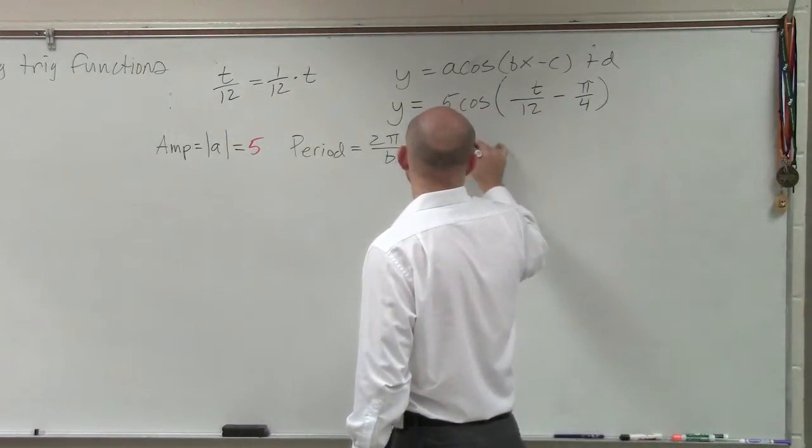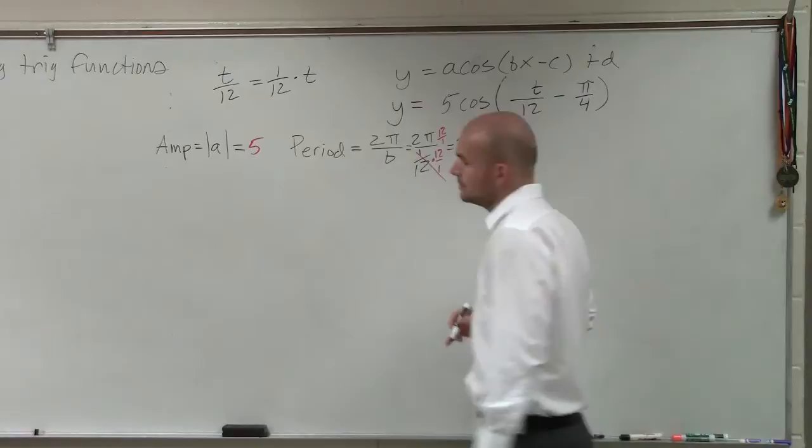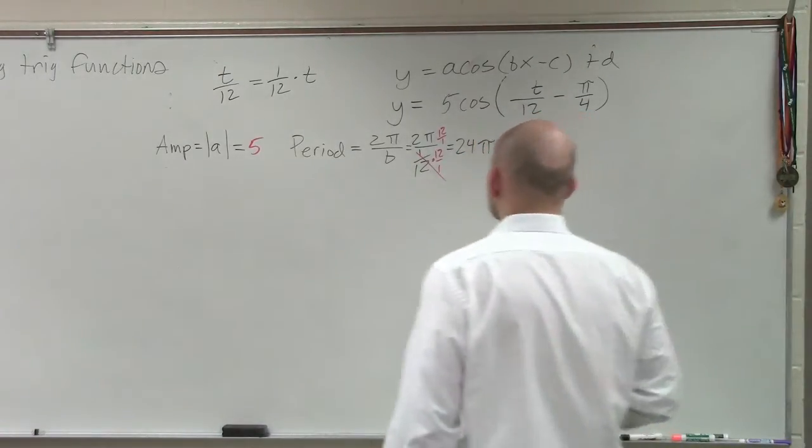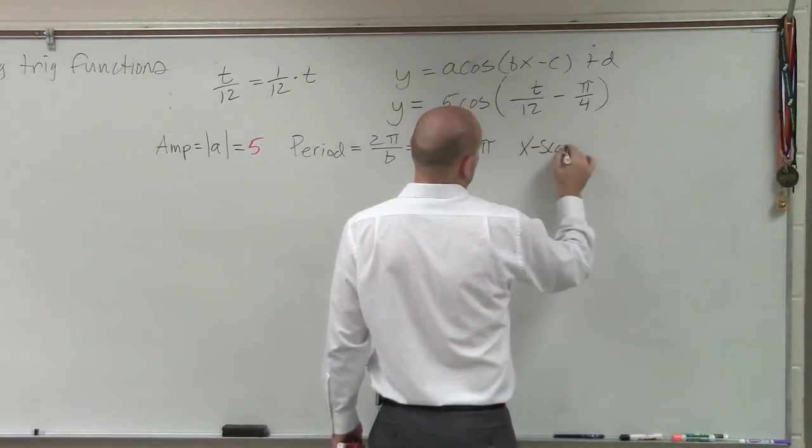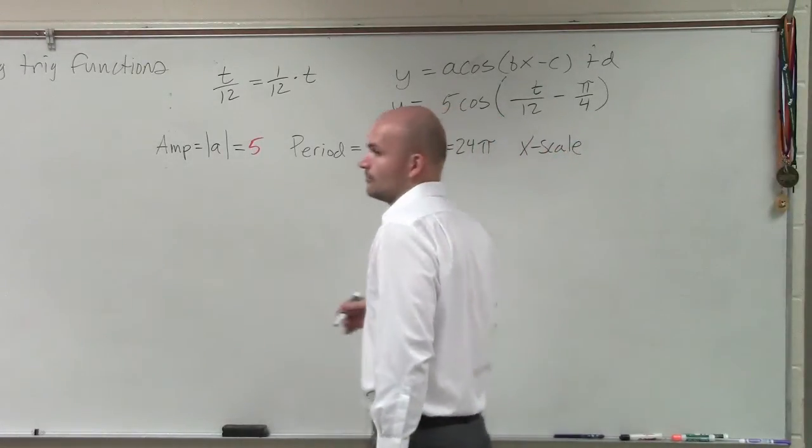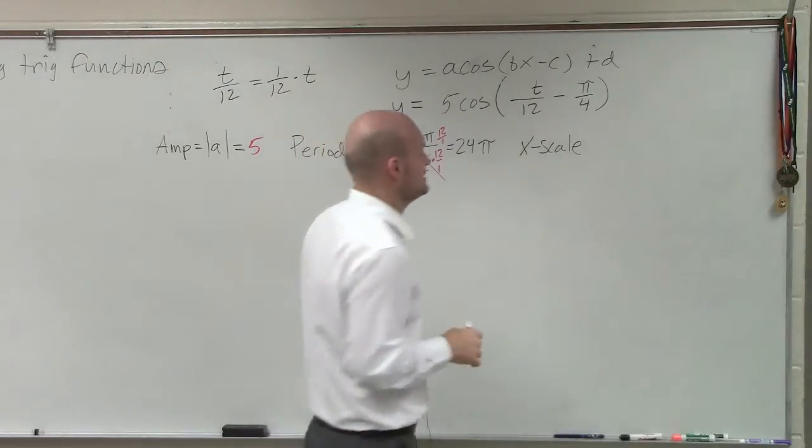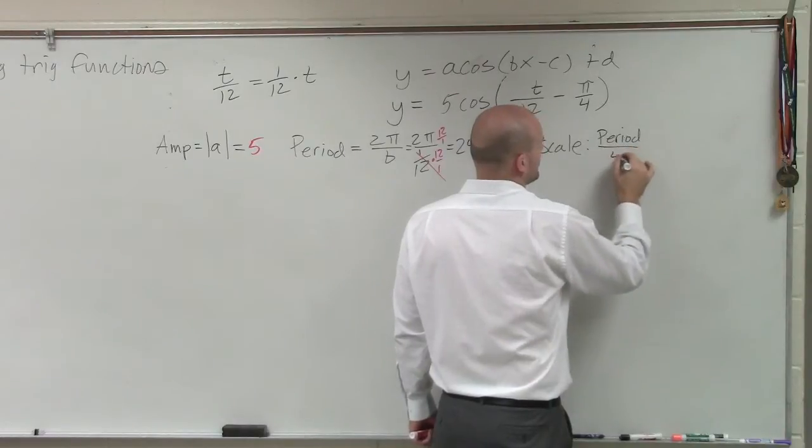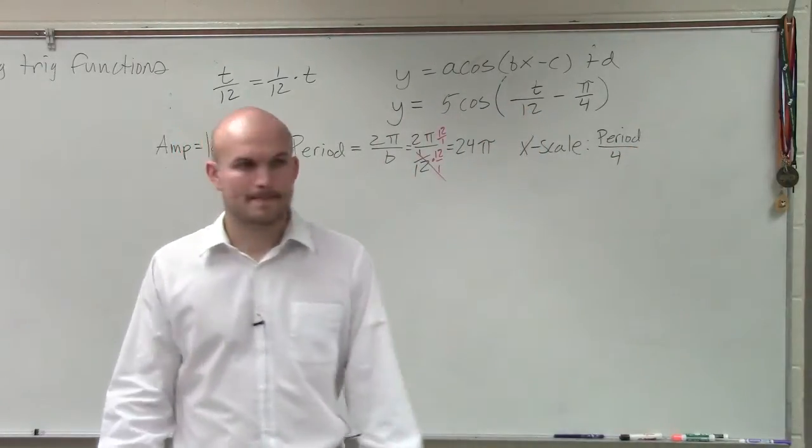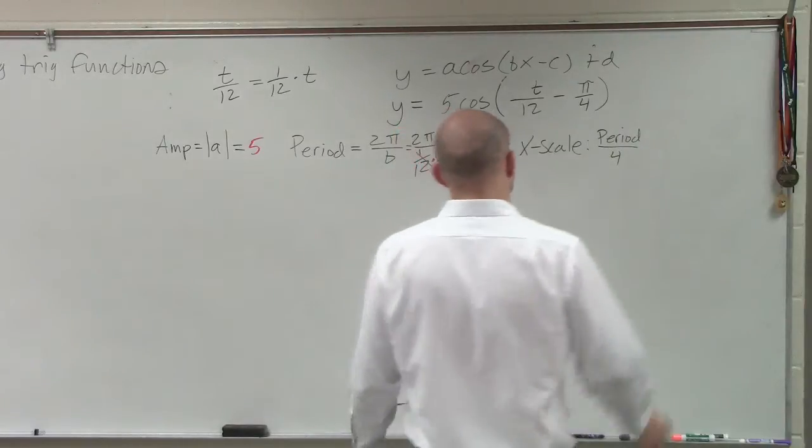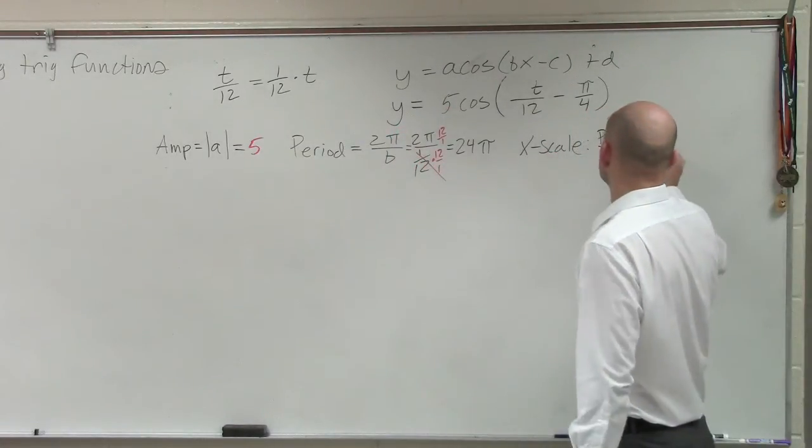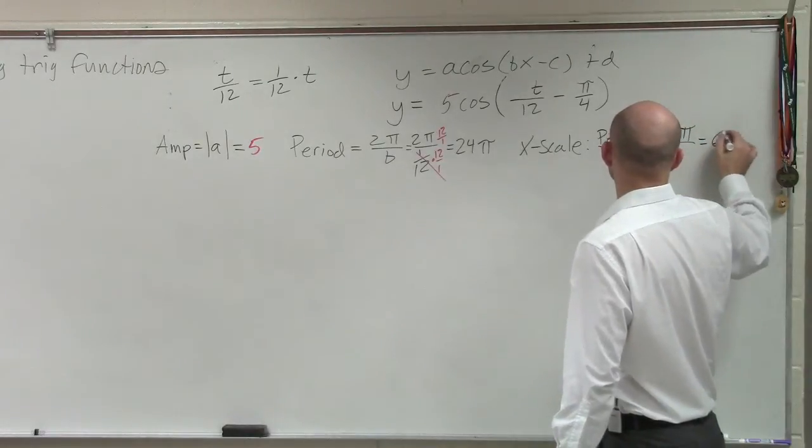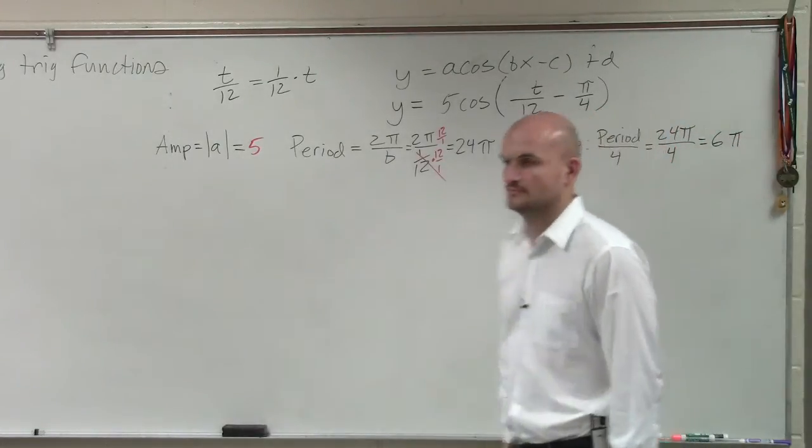Holy moly, that's a lot of π. Now, the next thing we need to do is determine the x scale. Now, remember, to determine the x scale, all we need to do is take the period over 4. So we take our period, which is 24π, and divide it by 4, and that equals 6π.